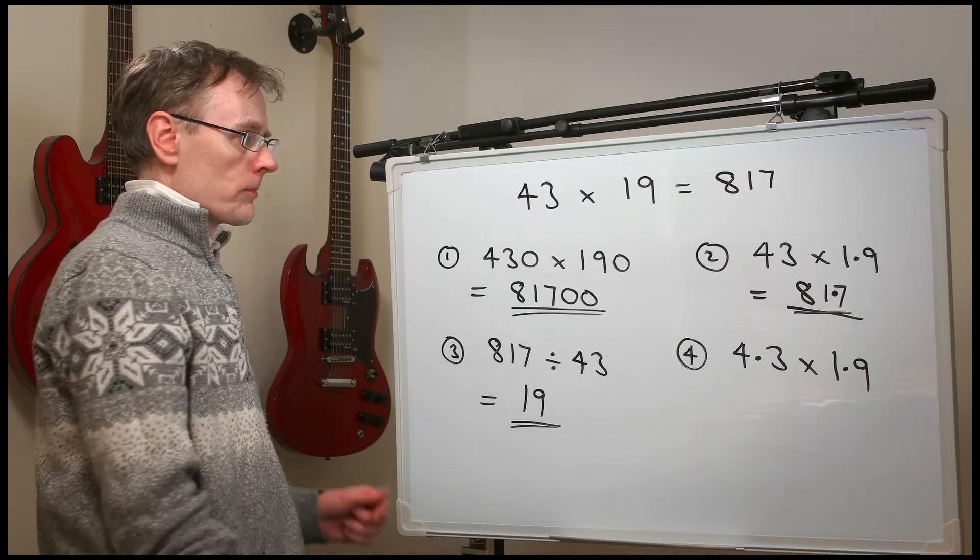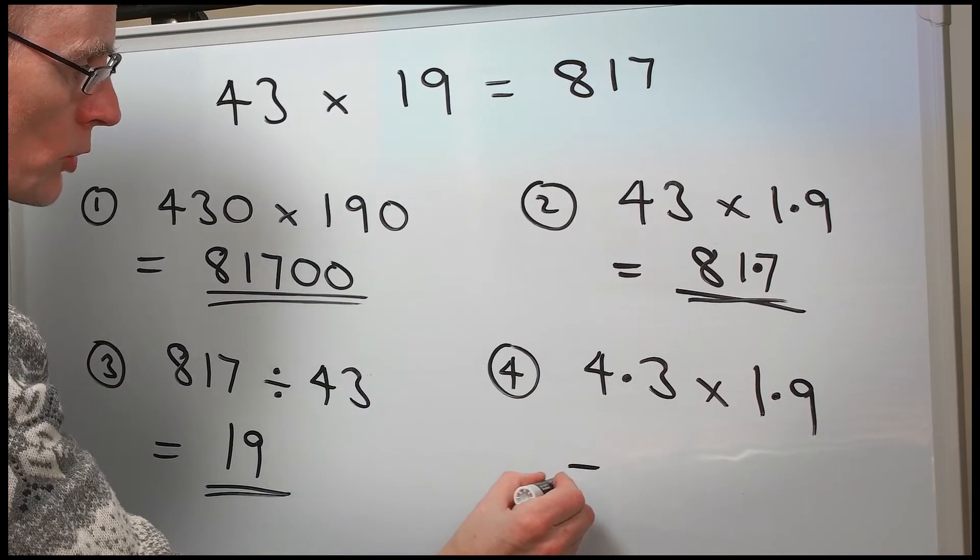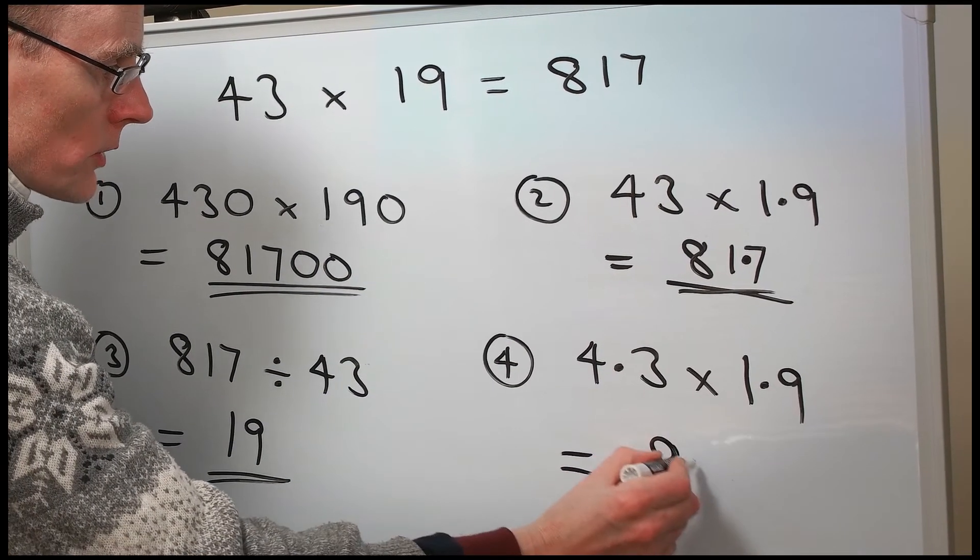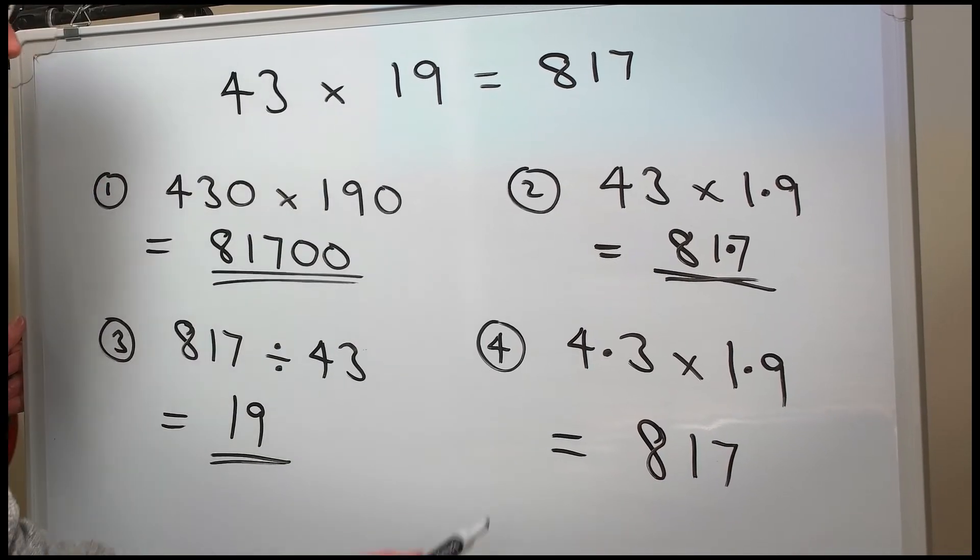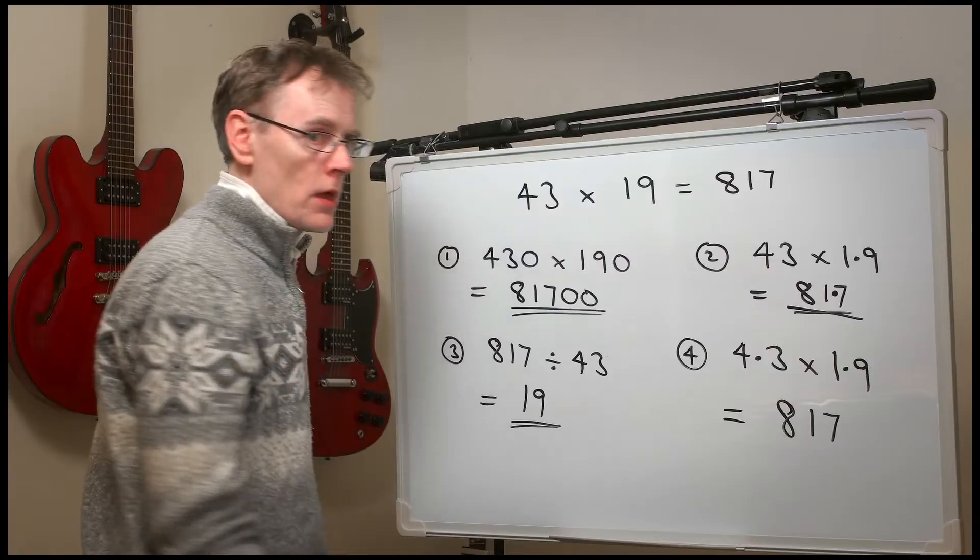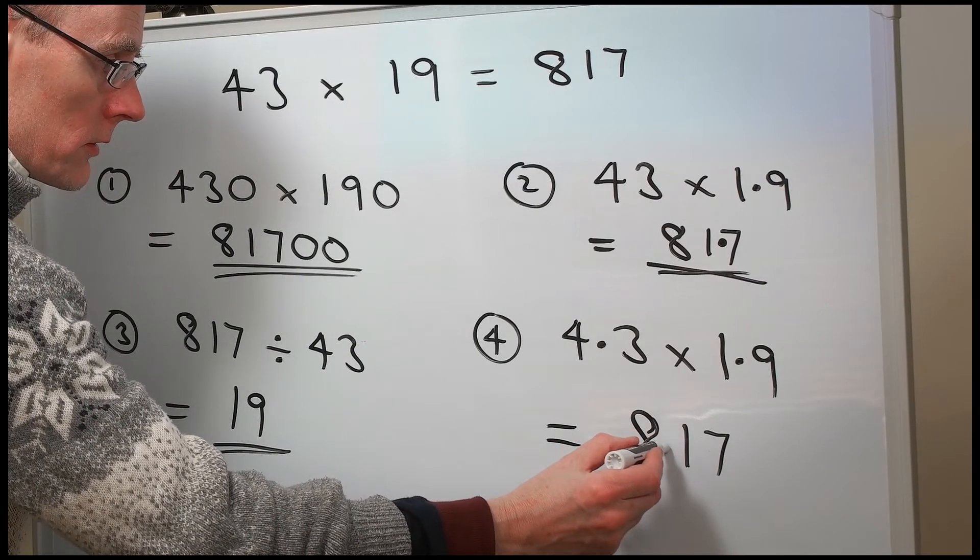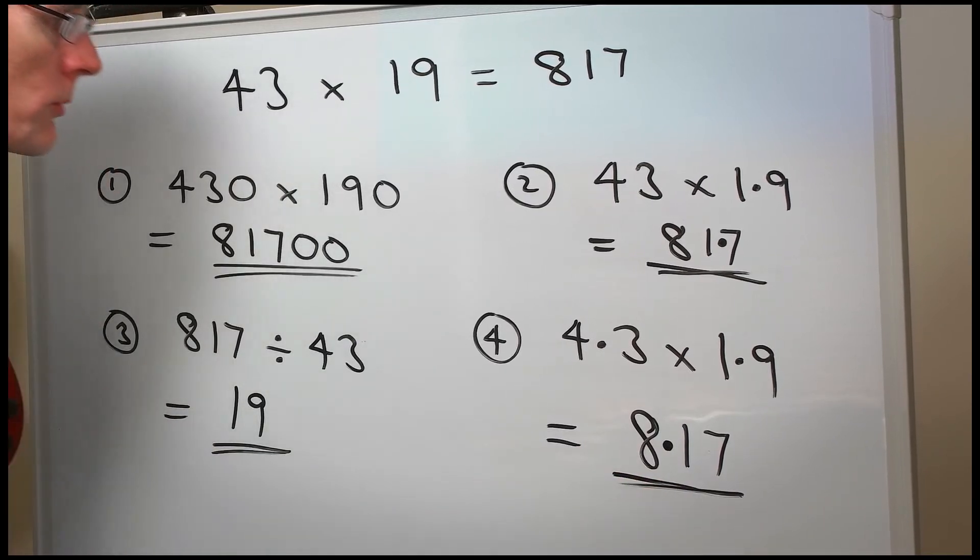And number four. So look, again, the numbers are quite similar, but they're much smaller. The answer is not 817. It must be 10 times smaller and another 10 times smaller. So the answer is 100 times smaller. Divide by 10 divided by 100. 8.17.